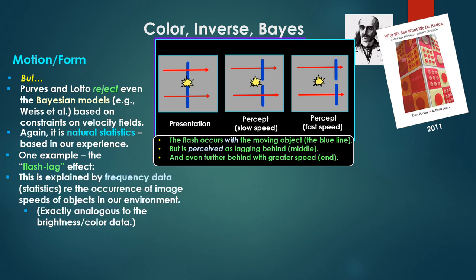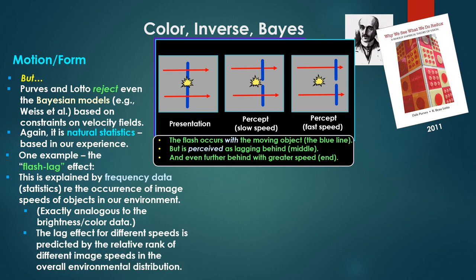Well this is explained by frequency data or statistics that they looked at in depth, with respect to the occurrence of image speeds of objects in our environment. So imagine they're looking at all kinds of objects and what we perceive as objects moving at a certain range of velocity and speed. Beyond a certain range then we can't even see that. Either on either side it's too slow or it's too fast. So this frequency data analysis is exactly analogous to the brightness and color data we just looked at briefly. The lag effect for different speeds is predicted by the relative rank of different image speeds in the overall environmental distribution.